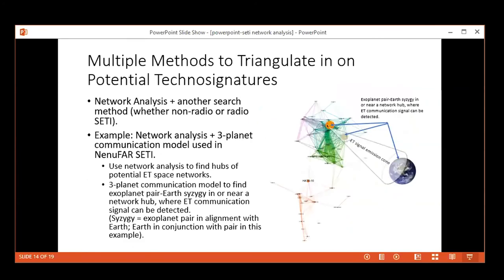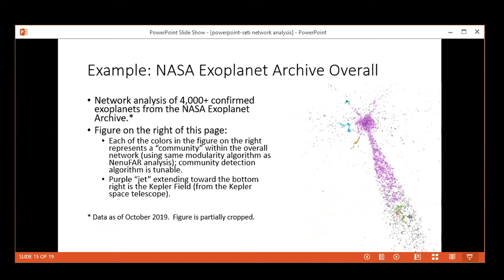The thing with network analysis when developing these potential ET space networks or exoplanetary networks is you can use network analysis with other methods to triangulate where these technosignatures could likely be. You could do the network analysis, identify where the hub is, and then use some other method within the hub. Maybe you could use what they call a syzygy, where there could be two exoplanets in that hub aligned with Earth, and maybe you're looking for some effects related to that three-planet alignment. Maybe some type of technosignatures, analogous to when our sun has a solar eclipse and you could see aspects of the sun's atmosphere like the corona that you otherwise wouldn't readily see without an eclipse. Maybe something like that, especially in the context of non-radio technosignatures.